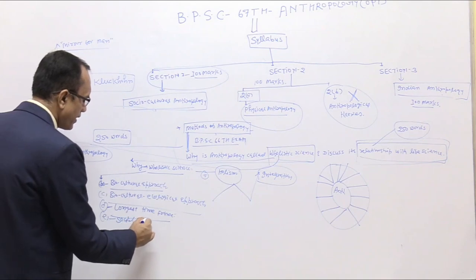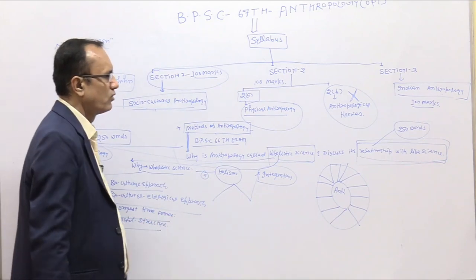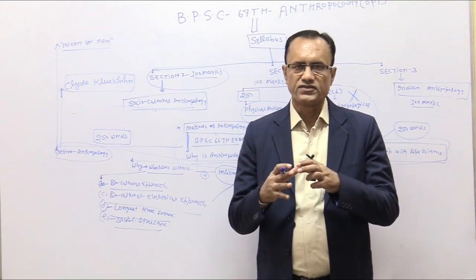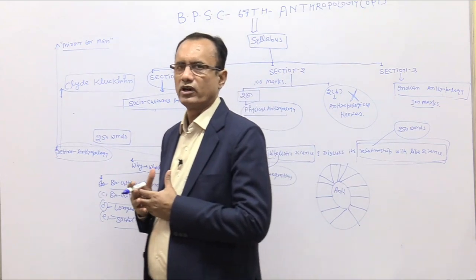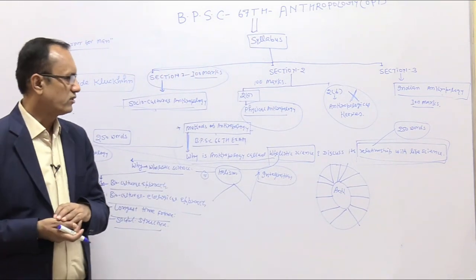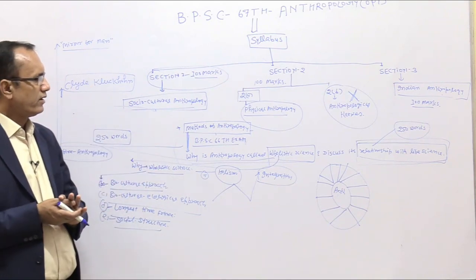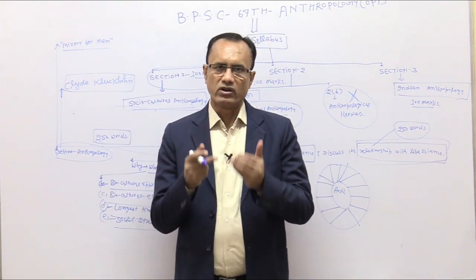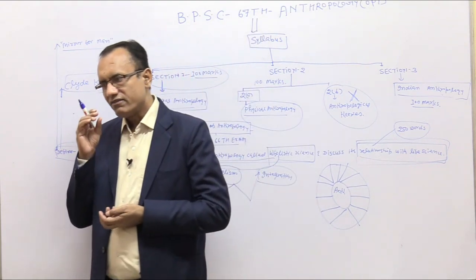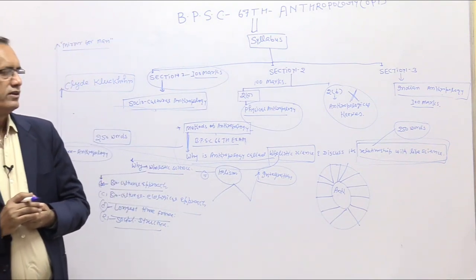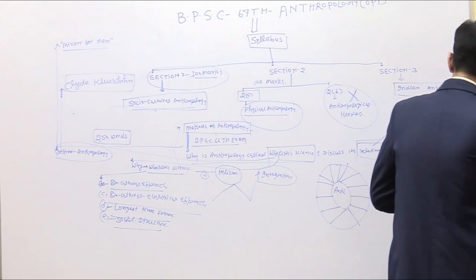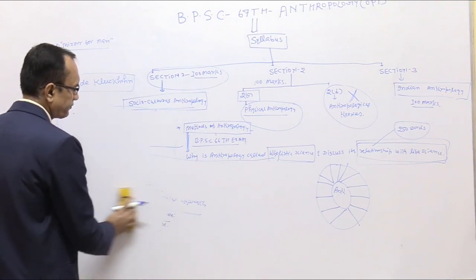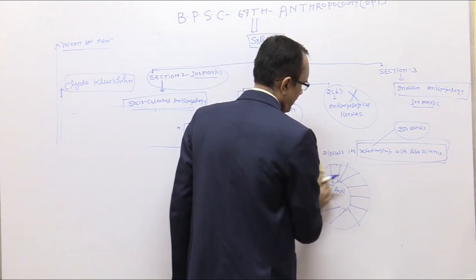We study each and every aspect of mankind and their interrelationships. Therefore Anthropology is known as a holistic science. We study all types of social structures. When we say Anthropology is a holistic science, we need proper data and proper knowledge to support that claim. This question from BPSC gives us insight that there are some important changes happening in the BPSC exam, and if you learn about those changes, you can write your answer in the right perspective.